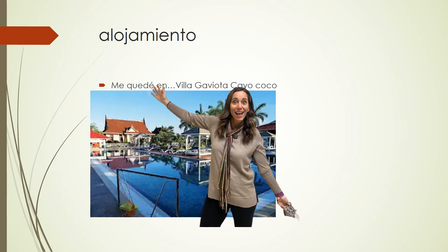Alojamiento: me quedé en Villa Gaviota Cayo Coco, and I would give some detail about that. Each slide — and again, this is just a template — should be about your lodging. It's all in the past tense; tell us where you stayed and describe it to us. I would say: Había una piscina. Estaba unos cinco minutos de caminar a la playa. Mi habitación era pequeña con una cama en el primer piso, etc. You want to use as much of the vocabulary. Focus on preterite and imperfect.